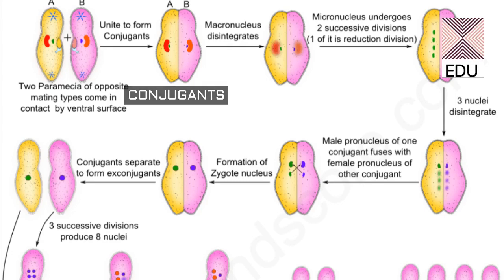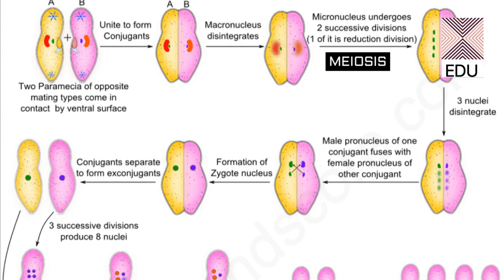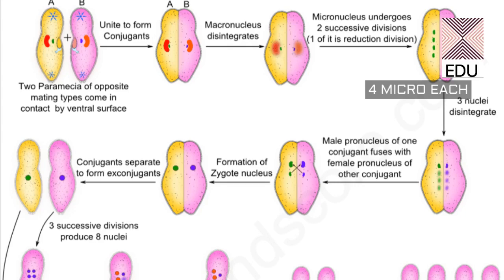First, the macronucleus disintegrates, and the micronucleus divides into four by meiosis. You can see the formation of four daughter micronuclei in the diagram — all four nuclei are haploid. Out of these four, three micronuclei disintegrate and only one is left.